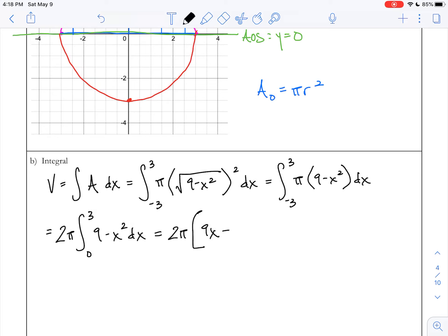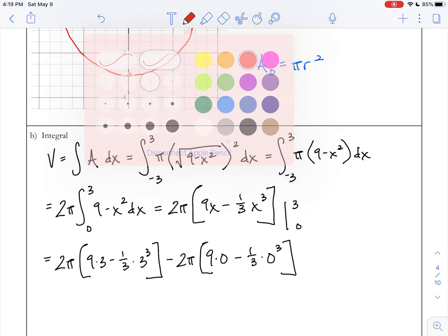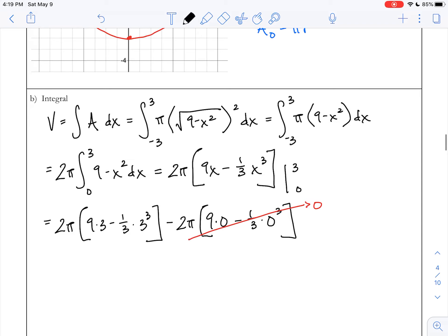Okay, let's take our anti-derivatives. So I have 2π times [9(3) - (1/3)(3³)] minus 2π times [9(0) - (1/3)(0)]. And I do a quick check, but this last term does in fact go to 0.